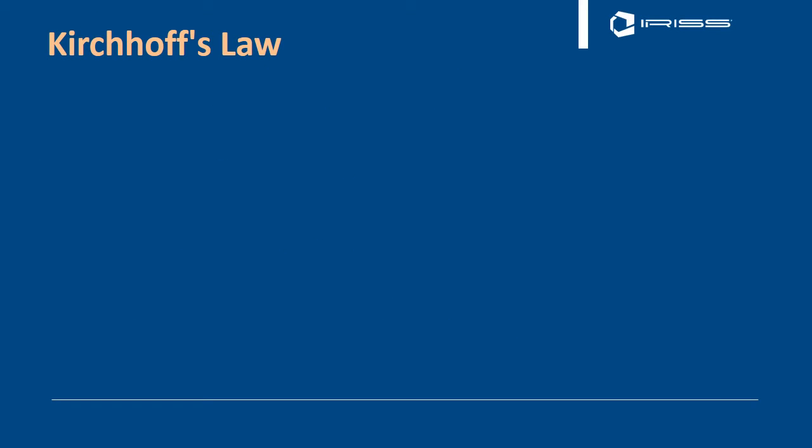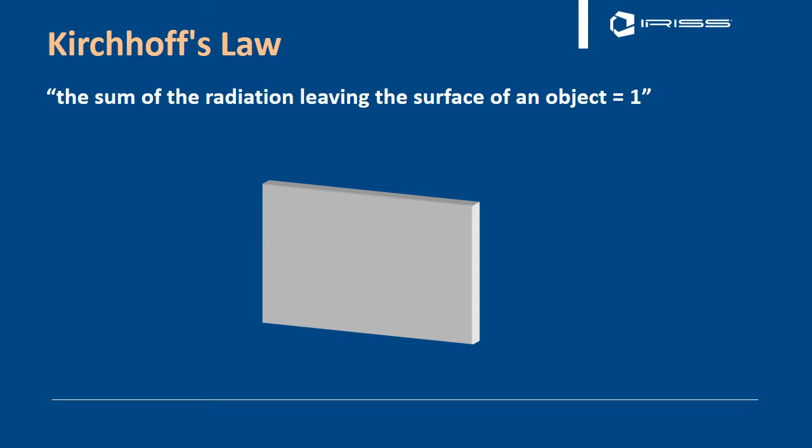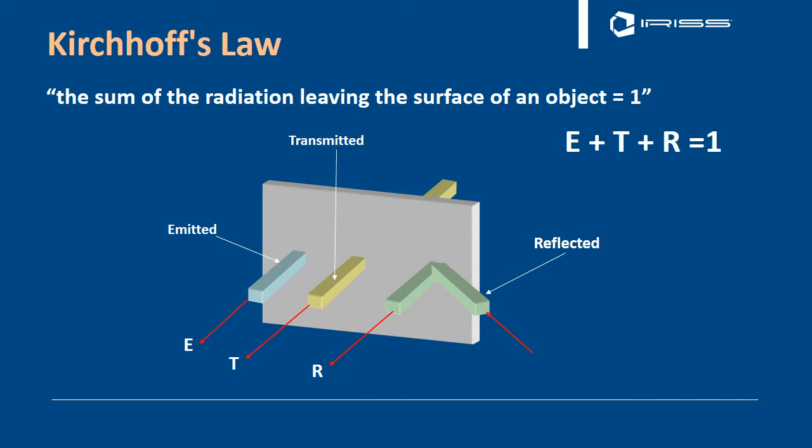Looking at some infrared science we have something called Kirchhoff's law, which says basically the sum of all the radiation leaving the surface of an object is equal to one. If you look at the surface of an object, that means the emitted radiation, the transmitted radiation, and the reflected radiation will all equal one.